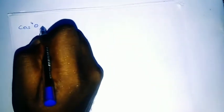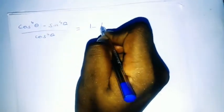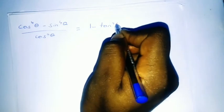Let's take a GCE type question. We have: cos⁴θ − sin⁴θ, all over cos²θ, equals 1 − tan²θ. We need to prove this identity.